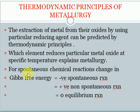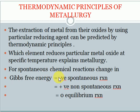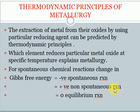For a spontaneous chemical reaction, the change in Gibbs free energy (ΔG) must be negative. If ΔG is negative, the reaction is called spontaneous. If ΔG is positive, the reaction is called non-spontaneous, meaning that chemical reaction never takes place.